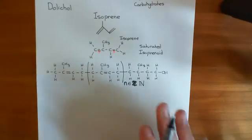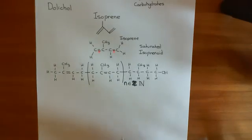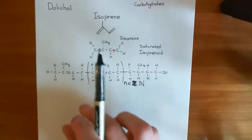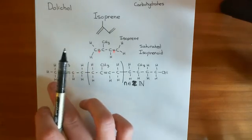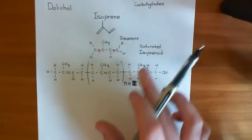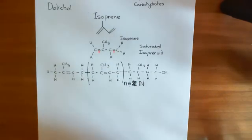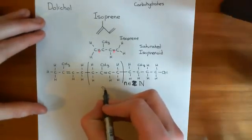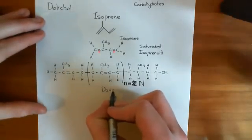That now is the structure of a dolicol molecule. It's built from isoprene, a polymer of isoprene. And then at the end, you have this isoprenoid group here. And then at the other end, you have this saturated isoprenoid group with that alcohol group at the end. And that's the structure now of this molecule dolicol.